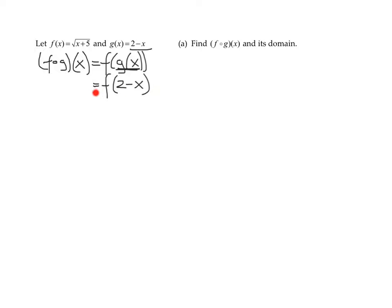Now I need to find the function at 2 minus x. This is where some students get very confused because there's x's here and x's here. If you get confused, x is just a dummy variable, a placeholder. So f of a little red box is the square root of that little red box plus 5. And what am I going to put in that box? 2 minus x.